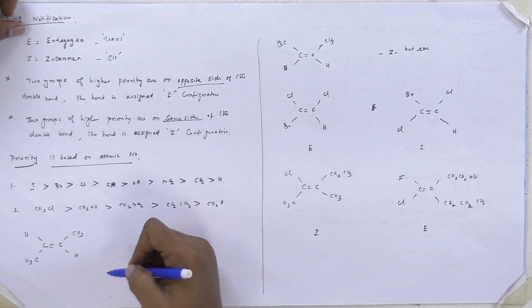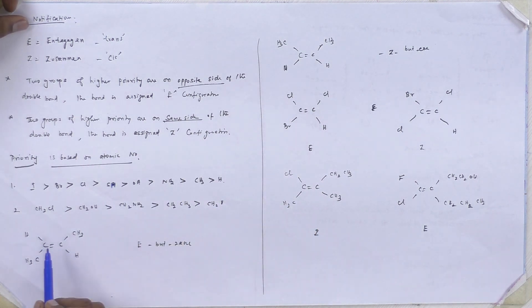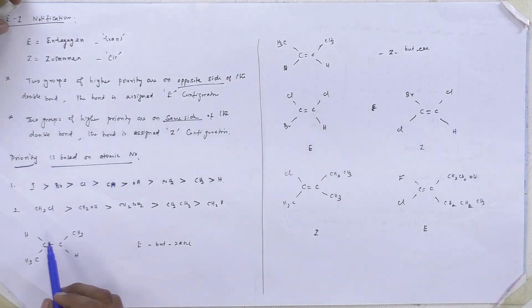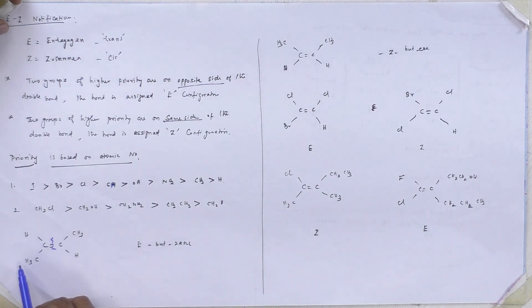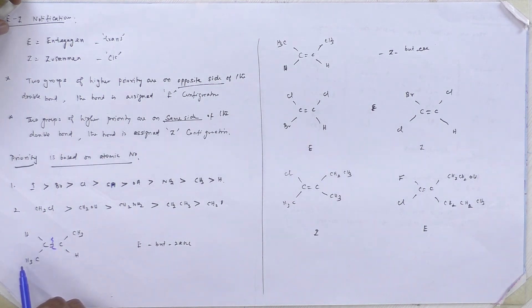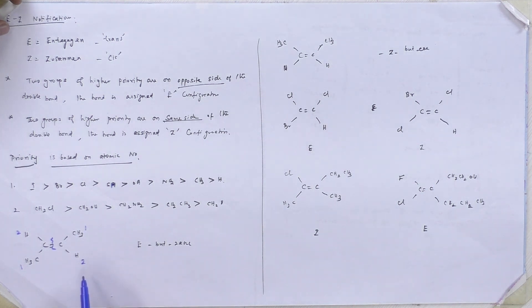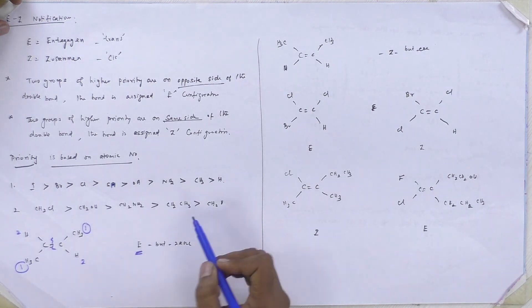Now let's start with an example. How will you give the E or Z configuration? So now let's split into two parts. Which one is highest priority? Methyl is highest priority and hydrogen is least priority. Here also methyl is highest and hydrogen is least priority. Now the highest priorities are on opposite sides, so it's an E configuration.